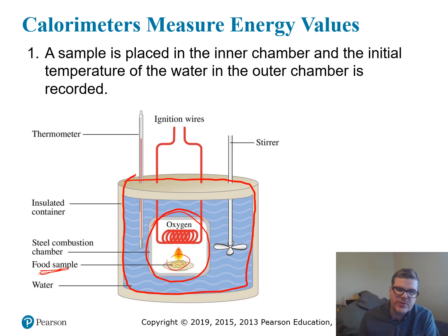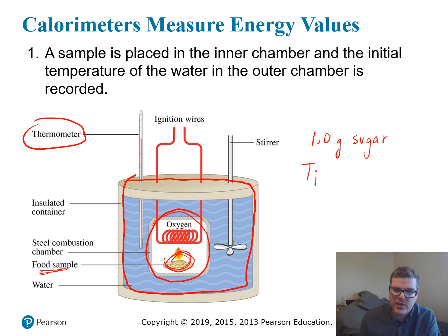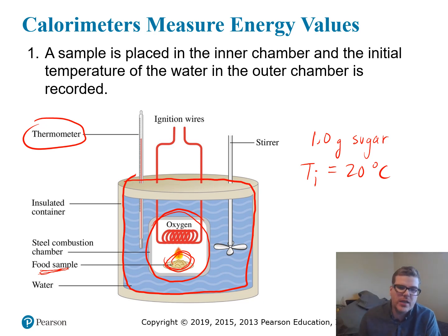Going step by step: first, we place our sample into the combustion chamber. Just to give some numbers, say we put one gram of sugar into the inner chamber — that's the food we're measuring energy content for. Then we measure the initial temperature of the water in the outer chamber using the thermometer; say the initial temperature is 20 degrees Celsius. We also need to know the precise mass of water. In this case, say we put in a liter of water. A liter is 1,000 milliliters, and the density of water is 1 gram per milliliter, so a liter of water is 1,000 grams.